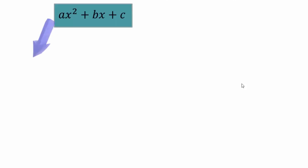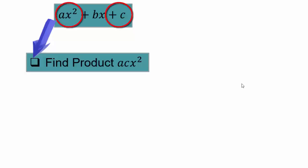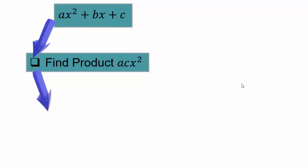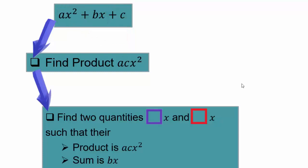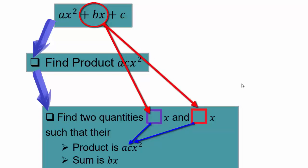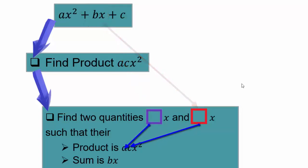The next thing you will do — remember from when we were doing algebra tiles — is take ax squared times c, which gives you ac x squared. Take the product of the first and last term, then take the middle term bx and split it into two so that the product of those two terms is ac x squared, but the sum is bx.